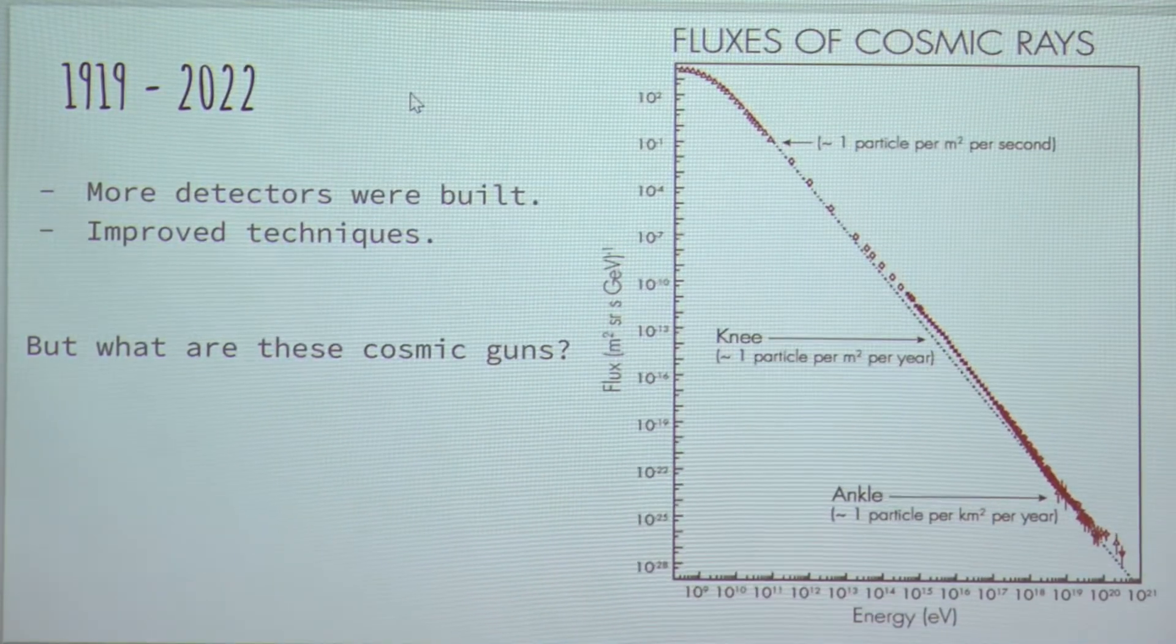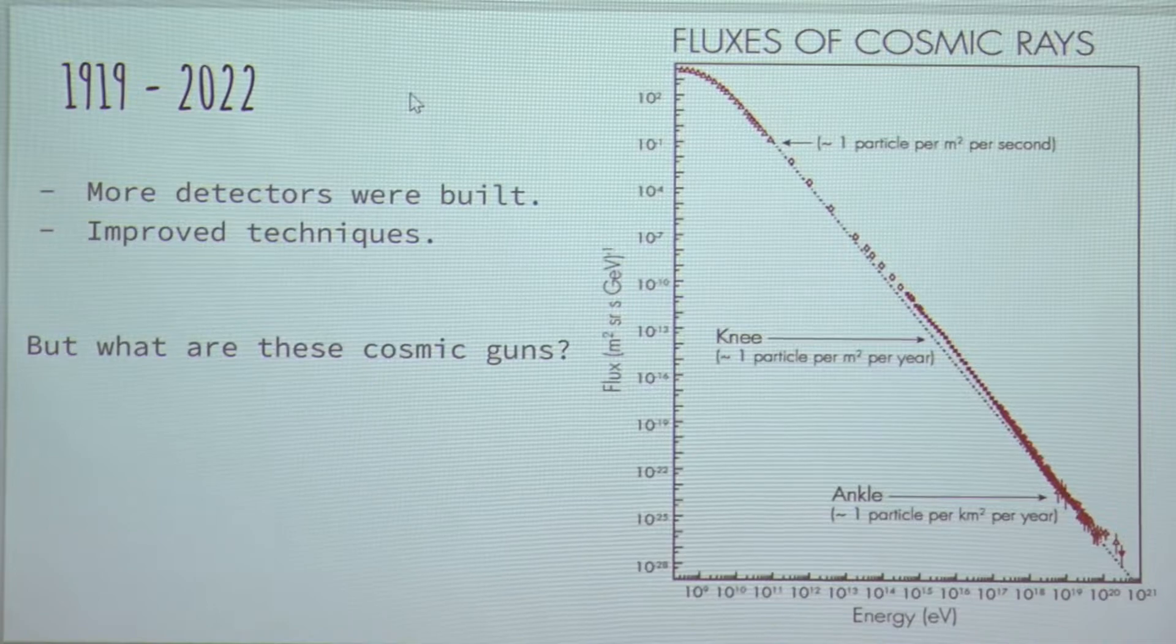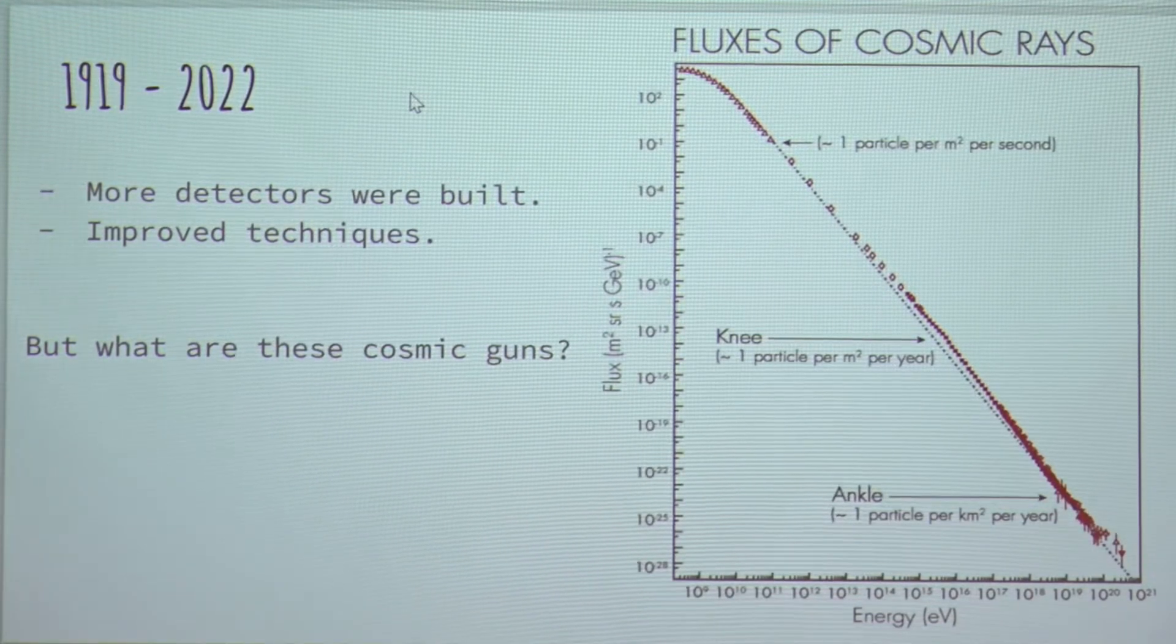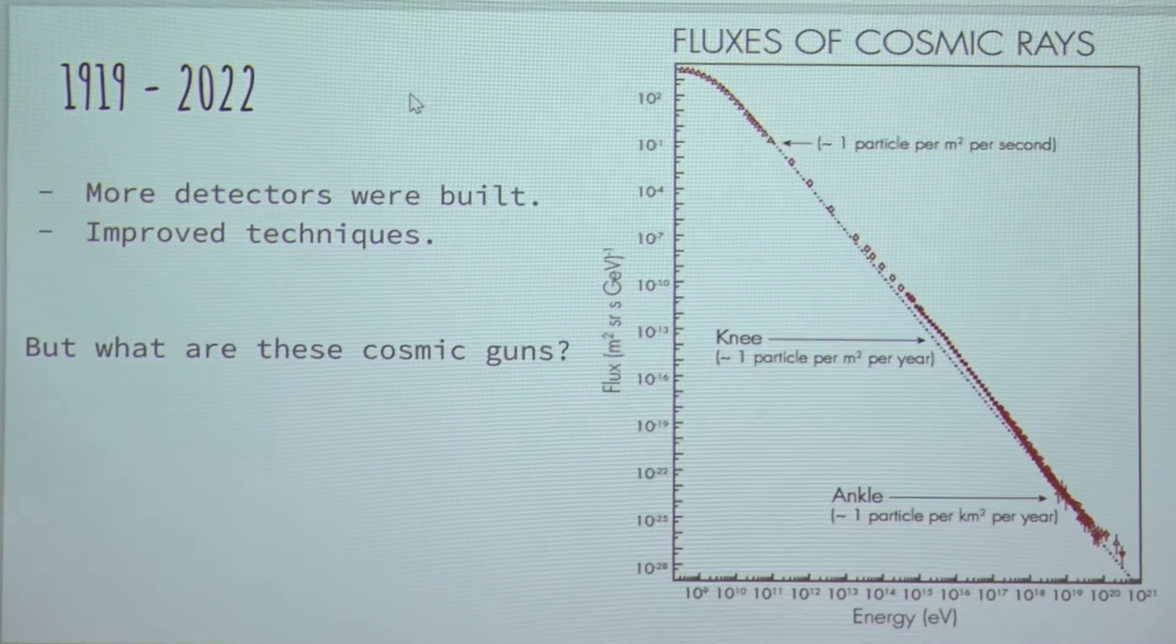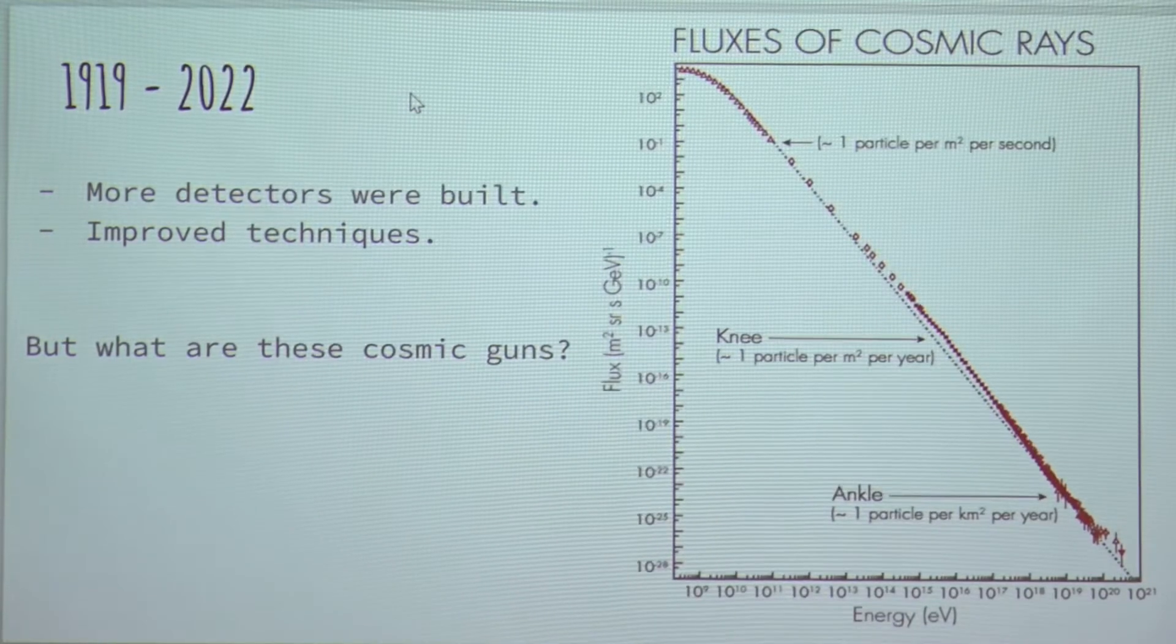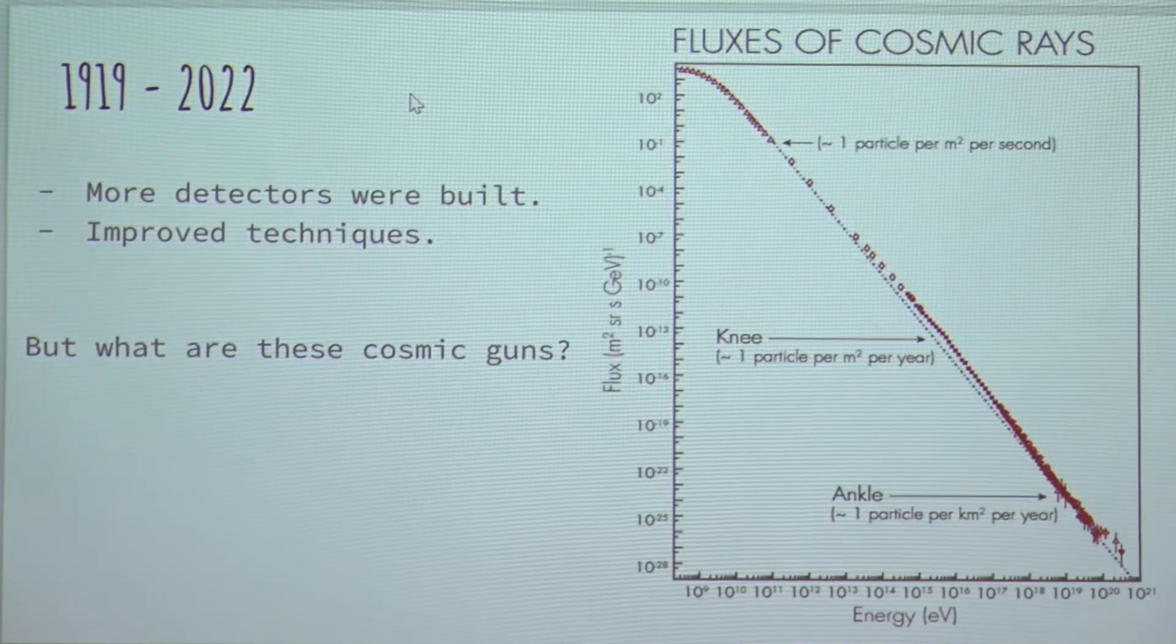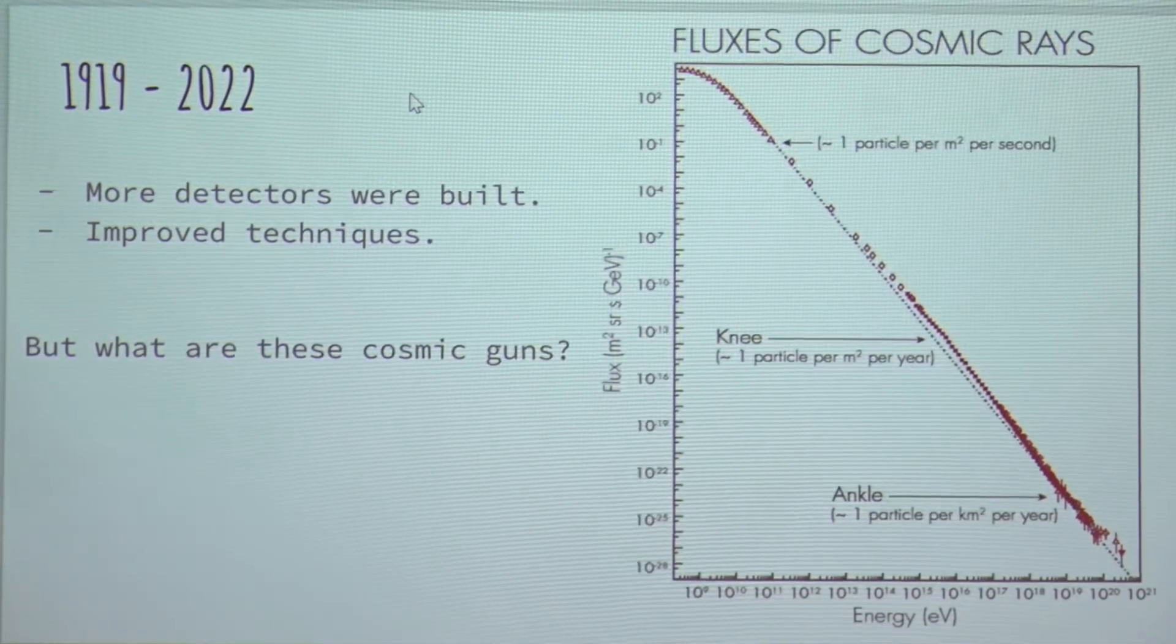So after this, more rigorous experiments were done, several detectors were built, and extensive techniques were used to detect more of these particles to understand where are these cosmic guns and what are these cosmic guns firing these bullets at us. It seems as if, since we still don't know what are these cosmic gun systems, it feels as if we have not progressed much.